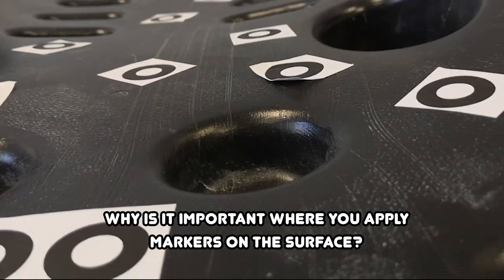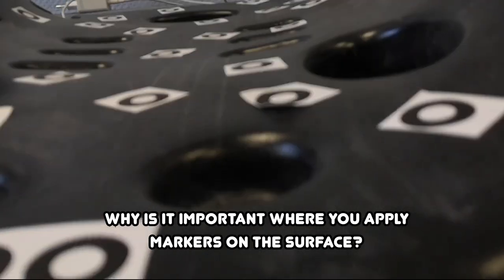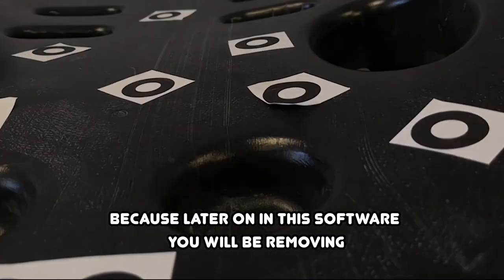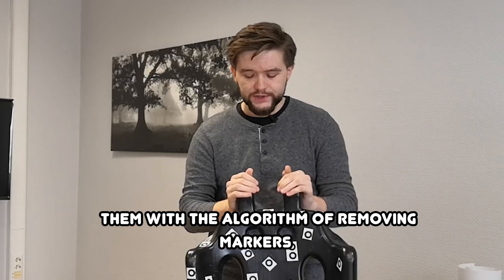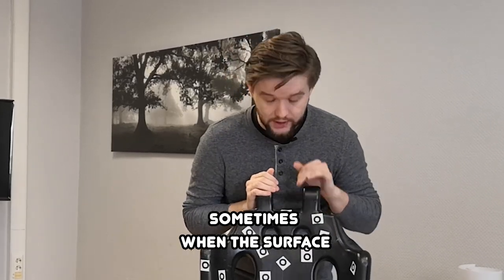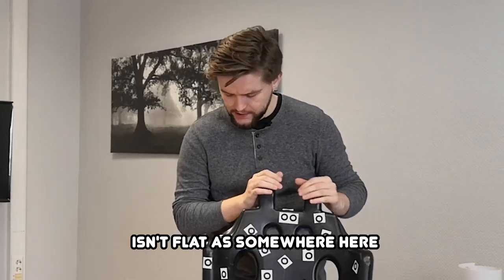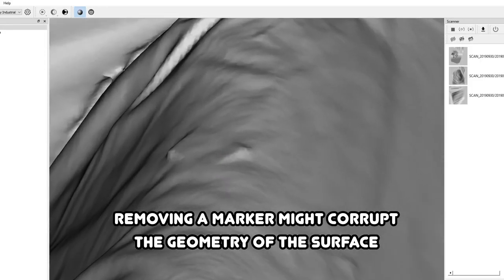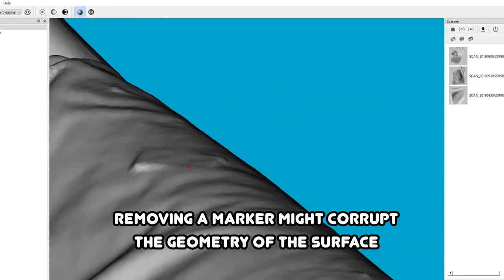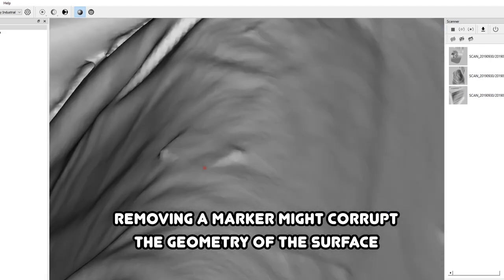Why is it important when you apply markers on a surface? Because later on in the software you will be removing them with the algorithm of removing markers, and sometimes when the surface isn't flat, when you remove a marker the geometry of the surface will be corrupted a little bit.